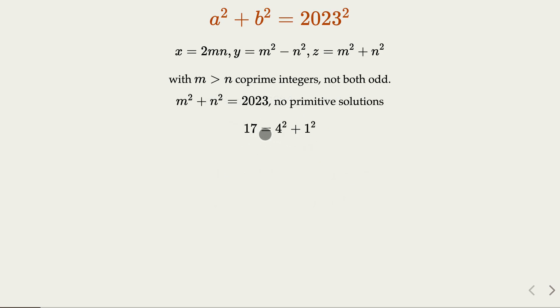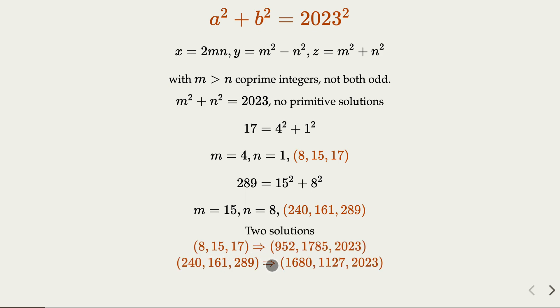So for 17 is actually 4 square plus 1 square, so that is m would be 4, n would be 1, and so this case the triple is 8, 15, 17. Now for the other case 289, that's 15 and 8, so m is 15, n is 8. You plug in this formula here you get this primitive triple. Of course once we have that we can just scale it up so that the hypotenuse becomes 2023, so we're going to get two solutions out of there.